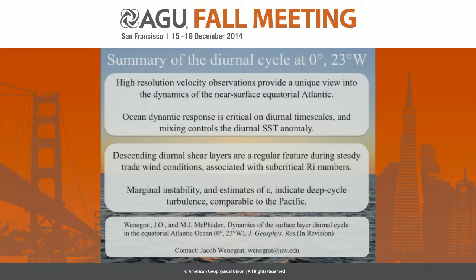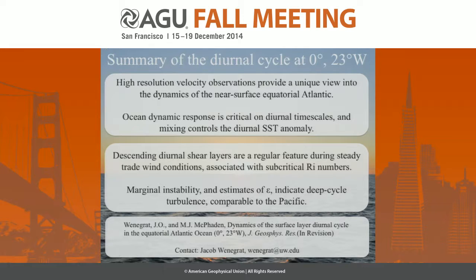Audience question: What effect do these deep turbulence layers have on the biology when they're occurring? Response: That's a great question, and biology has never been my strong suit. We know that these layers are quite important for heat flux and momentum flux, and so I don't think it's too far a speculation to say they would be important for nutrient fluxes and perhaps biological fluxes as well. The mechanism here is really these large overturning events, essentially Kelvin-Helmholtz instabilities, which obviously has implications for mixing across the thermocline and at the top of the thermocline.